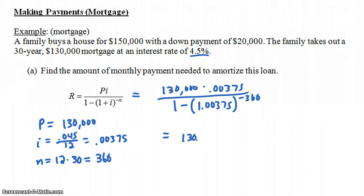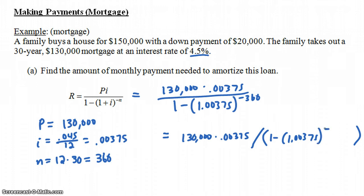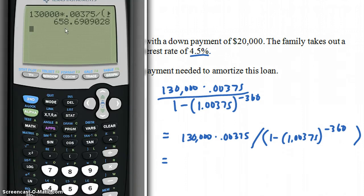To type this in your calculator, put the numerator 0.00375 times 130,000 — you can use parentheses if you want. For the denominator, you should use parentheses because you're adding or subtracting things. You could type it in step by step, but make sure you don't round until the very end — only round to the nearest penny at the final step. When I typed this in my calculator, the answer was $658.69.